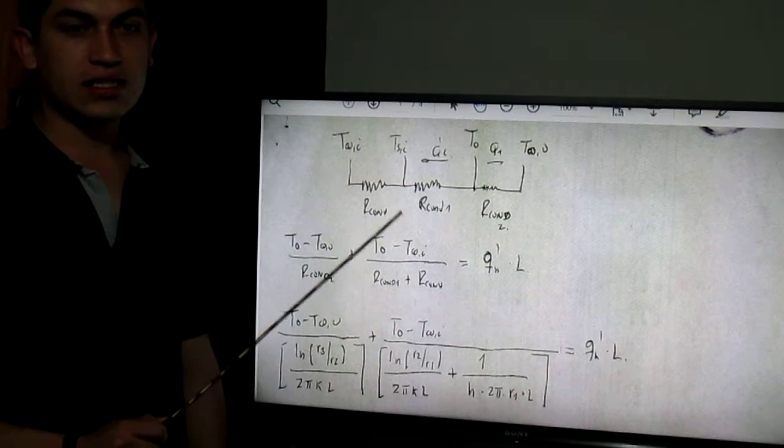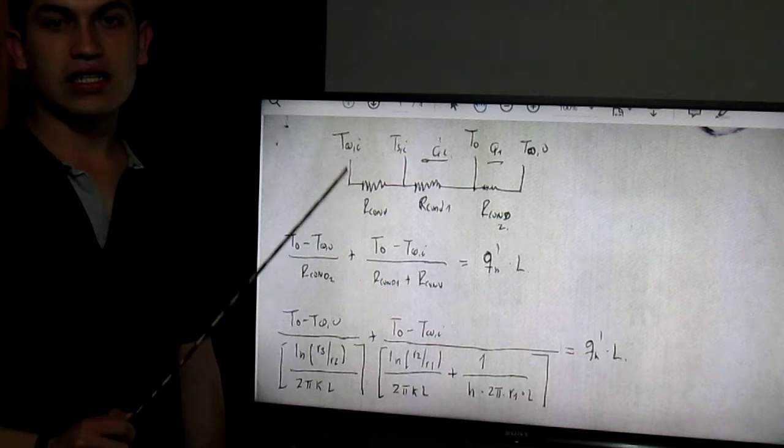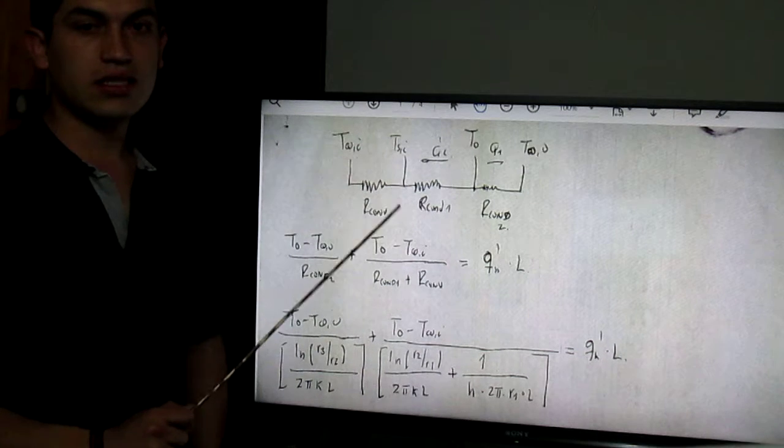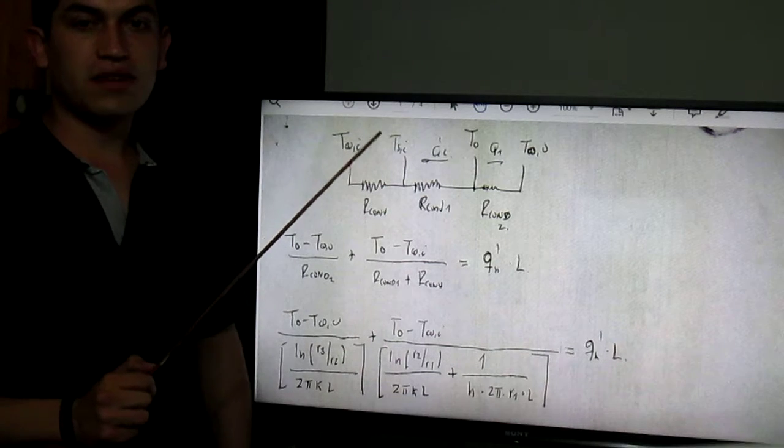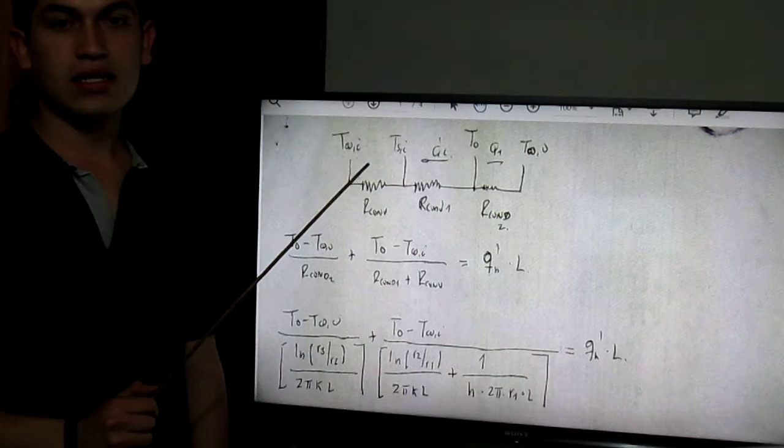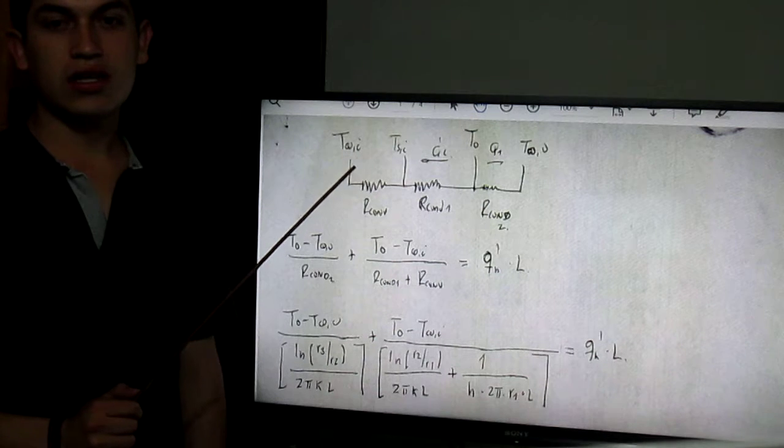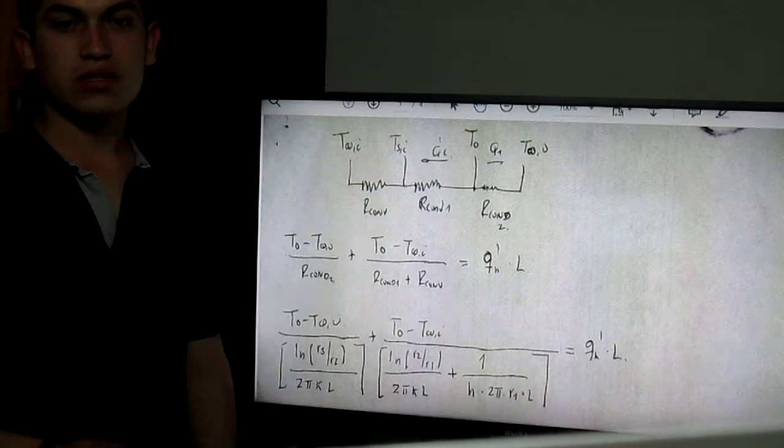Part A: Draw the thermal resistance network of the heat transfer from the liquid to ambient air T infinity. Identify all the resistance elements and write down their expressions in terms of the parameters of the problem: QH, R1, R2, and R3.